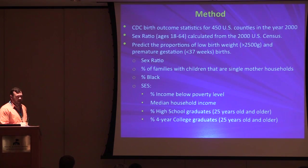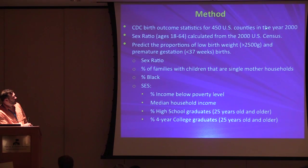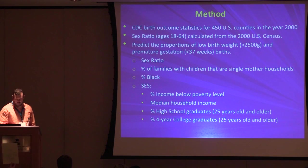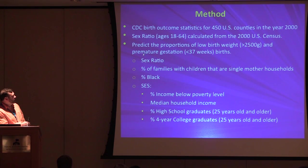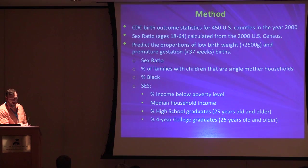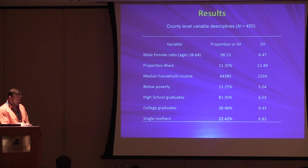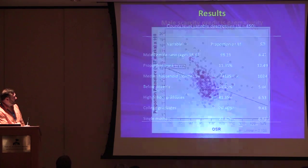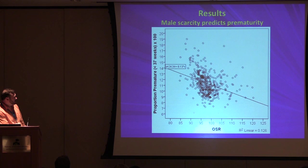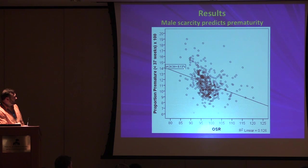This study is conducted across the United States — across 450 different counties in the year 2000. We included the sex ratio and a range of sociodemographic factors known to predict birth outcomes. The bivariate relationship shows clearly that male scarcity predicts prematurity.